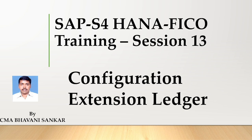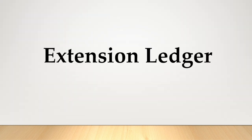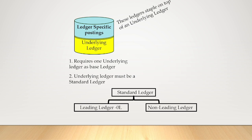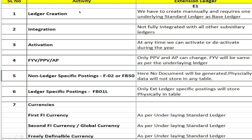Now, what is an extension ledger? We already have plenty of discussion about extension ledger. Extension ledger always requires one underlying ledger as a base ledger. That underlying ledger must be a standard ledger — which may be a leading ledger or non-leading ledger — and over that underlying ledger we have some ledger-specific postings.